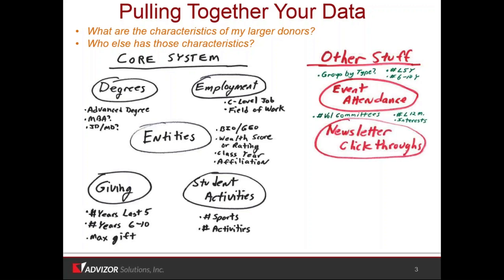On newsletter click-throughs — most of our clients, we have several hundred clients in fundraising — don't collect detailed newsletter click-throughs. But this is great information because it's your people telling you whether they're interested in what you're messaging to them. You can figure out how many newsletter clicks they've done in the last 12 months or last six months. This has a fairly short tail — if they clicked on a newsletter three years ago, it doesn't matter. But if it's recent, they're telling you they're interested. And also by what they're clicking on — if they continually click on neuroscience research, they're probably interested in neuroscience. If they always click on the football team, they're interested in sports. So this gives you not only an indication of how interested they are, but what they're interested in.